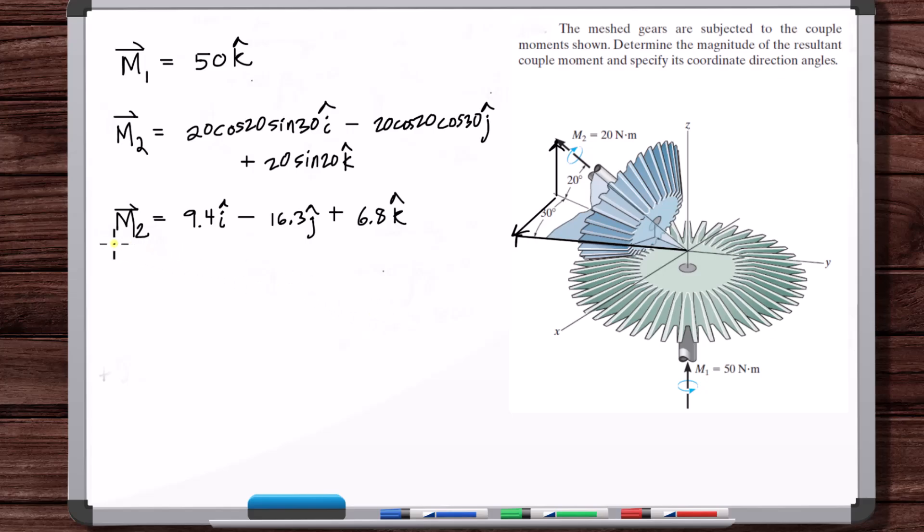Now just sum the moments. It's that easy. These are free vectors. Just sum them. So M1 plus M2, that's MR. So 9.4 I minus 16.3 J plus 56.8 K.